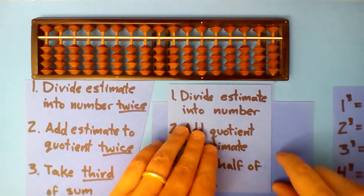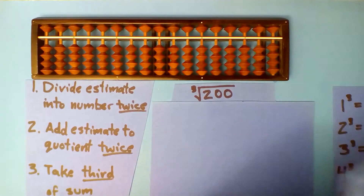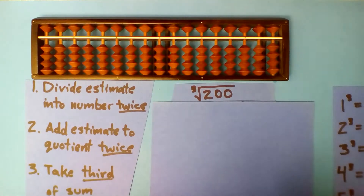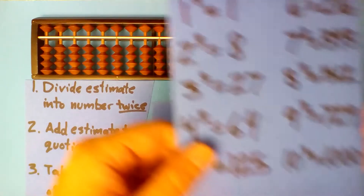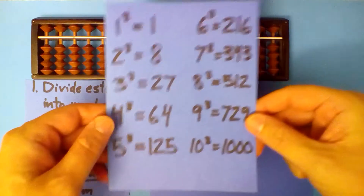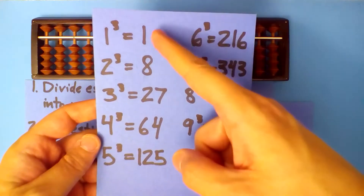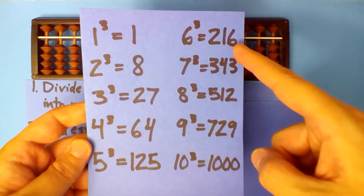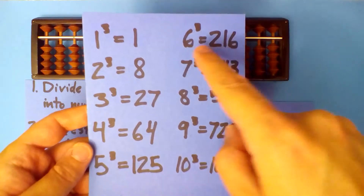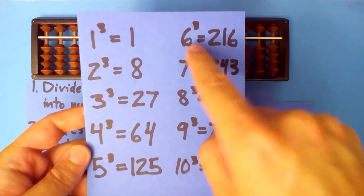Let's try this example to see how it works. What is the cube root of 200? Well, we need to know our cubes first. Which number cubed is about 200? 6 — 6 cubed is about 200. So let's use 6 as our estimate.